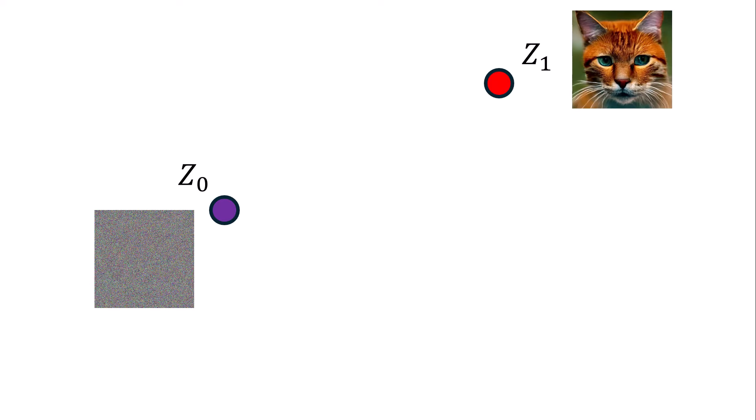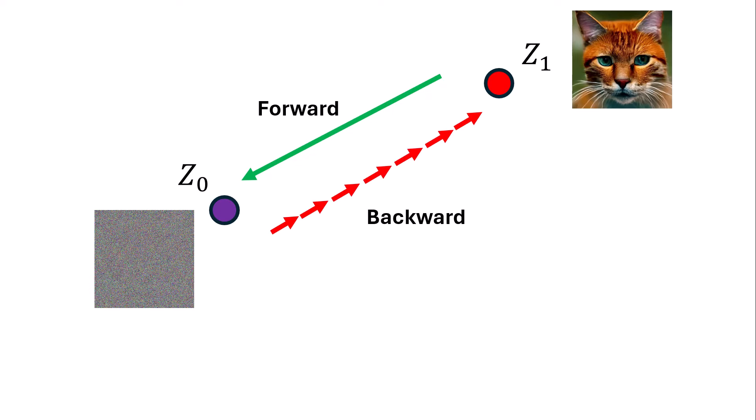Diffusion models in general have two sorts of images in their process. One is a noise image, let's denote it as Z0, and the other is an actual RGB image, let's denote it as Z1. Our whole goal is to find a transition between these two sorts of images. In forward diffusion, in a single step, we can transfer from Z1 to Z0, but in the backward step we need multiple small steps to go back from Z0 to Z1.